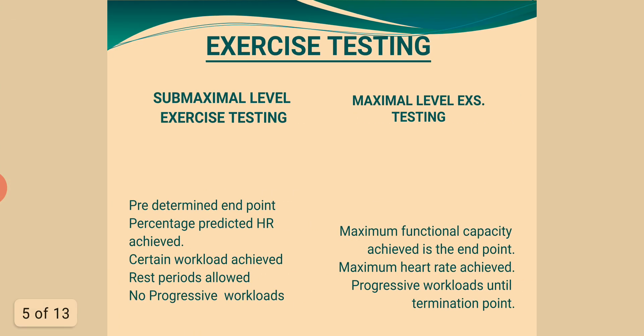Exercise testing types: Submaximal level exercise testing uses a predetermined end point — a percentage of predicted heart rate achieved or a certain workload achieved. Rest periods are allowed with no progressive workloads. Maximal level exercise testing uses maximum functional capacity as the end point, with maximum heart rate achieved and progressive workloads until a termination point.